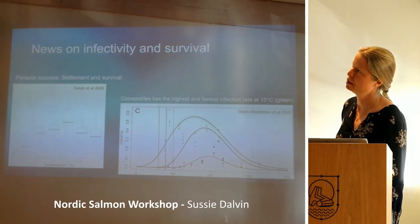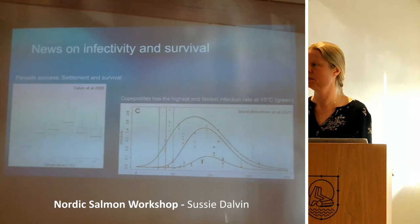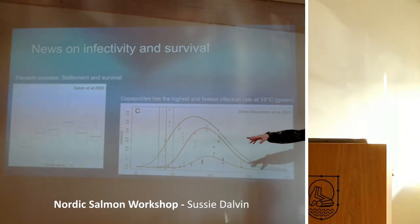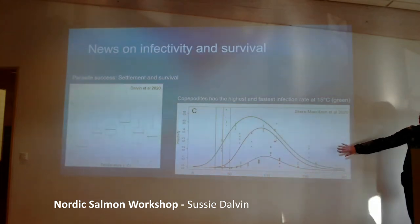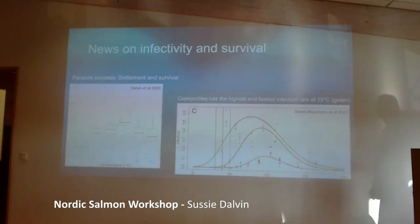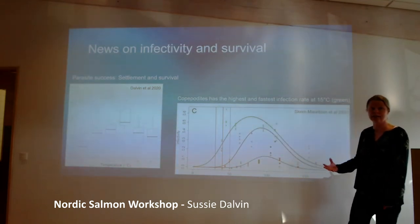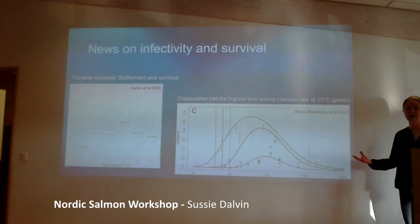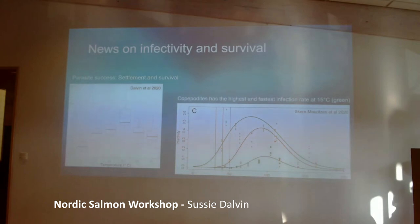We've done studies on infectivity and survival, and I've done a lot of work on temperature. Looking at temperatures from 6 degrees up to 15 degrees, we see that the parasite is more and more successful. The black graph is 5 degrees, red is 10, and the green curve is 15 degrees. At 15 degrees they become infected much earlier, and the area under the graph illustrates how much they can infect - sea lice really likes 15 degrees. But it's a parasite of a fish that's also pretty happy at 15 degrees. As a rule of thumb, it mainly likes what the fish likes.